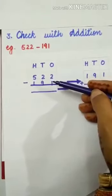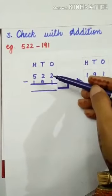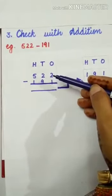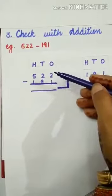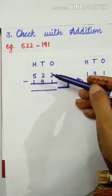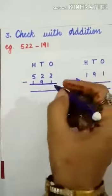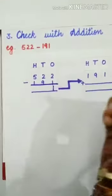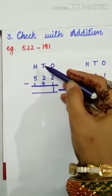2 minus 1 means if we subtract 1 from any number, we get the predecessor of that number. What is the predecessor of 2? Yes, it is 1. So write down 1 here. Now come to the tens column. 2 minus 9 is not possible.